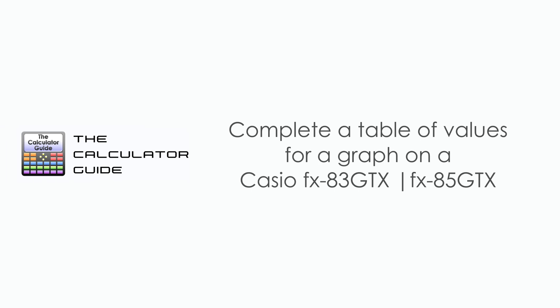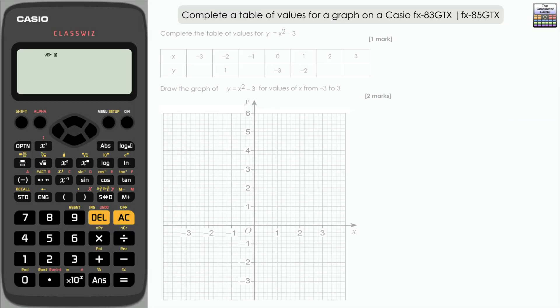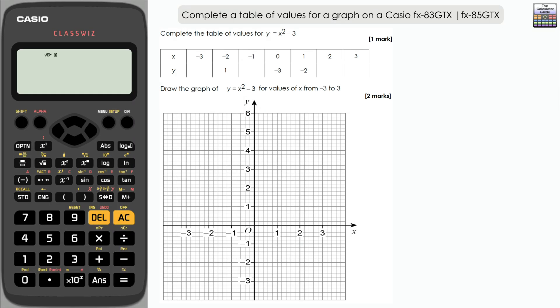Hello and welcome to the Calculator Guide video on how to complete a table of values for a graph on a Casio fx-83GTX or 85GTX. We have an example here of a typical question where we need to complete the table of values, in this case for y equals x squared minus three. We have a table there which has been partially filled in, we have to fill in the rest of the details and then draw the graph of that same function.